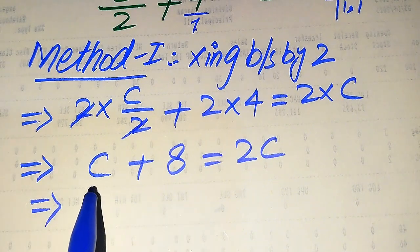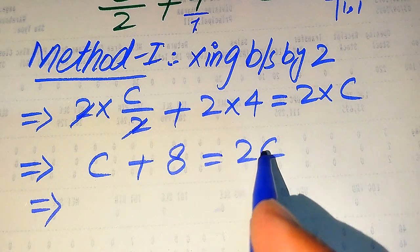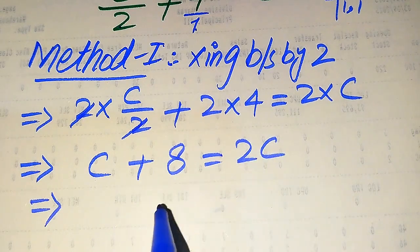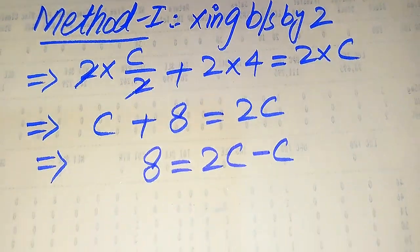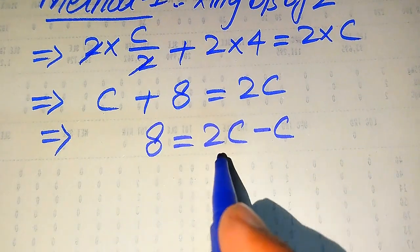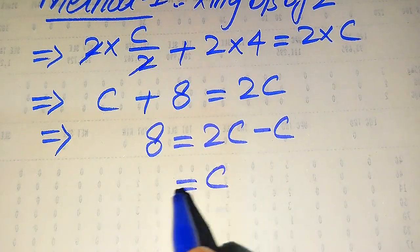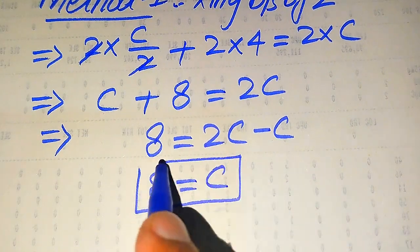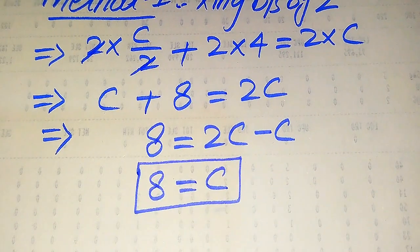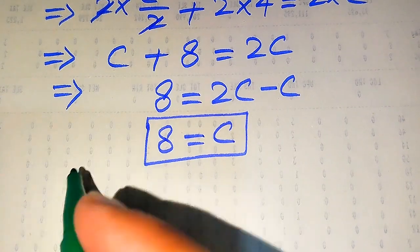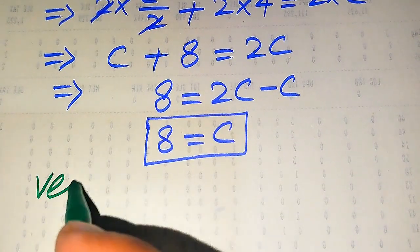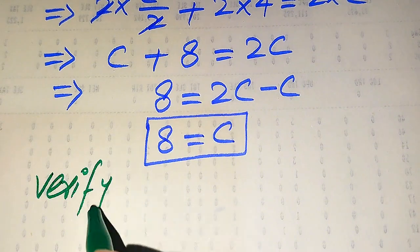This is positive C on the left side; when we move it to the right hand side it becomes negative C. So we get 8 equals 2C minus C, and 2C minus C equals C, giving us C equals 8. In this method we get only one root of the given equation, and that is C equals 8.